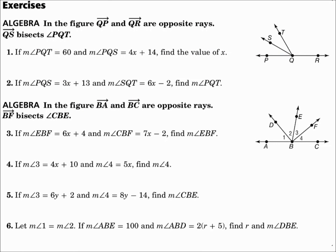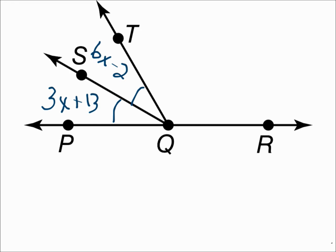Number two: if the measure of angle PQS equals 3X plus 13, and the measure of angle SQT equals 6X minus 2, find the measure of angle PQT. We know that those two angles are congruent because ray QS is a bisector. So we can make an equation, 3X plus 13 equals 6X minus 2, and we'll solve for X.